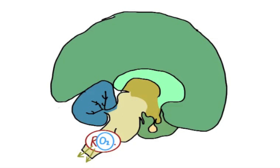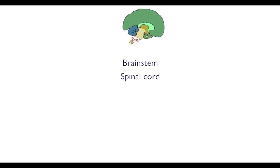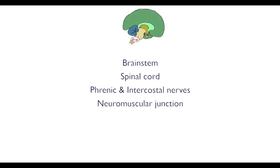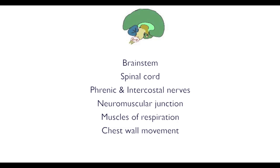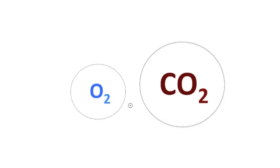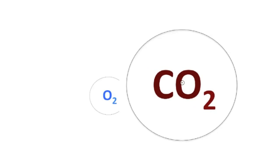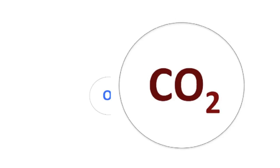So CO2 effectively causes a propagation of action potentials from the brainstem down the neurons of the spinal cord, from motor neurons at the neuromuscular junction to the muscles of respiration, and these then move a hopefully intact chest wall to cause air to be sucked in and blown out of the lungs — aided, of course, by the elasticity of the lungs themselves. If there is a failure of ventilation, there is a problem with at least one of these steps, causing arterial oxygen to drop and arterial CO2 to build up, as the patient is simply not shifting enough air in and out of the lungs.